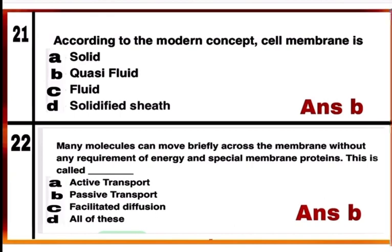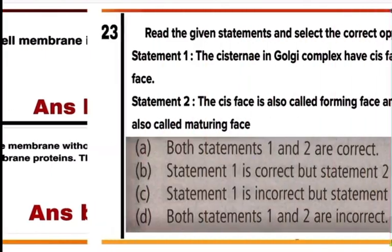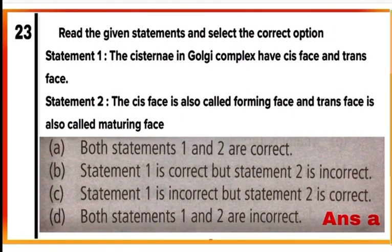Question 22: Many molecules can move freely across the membrane without any requirement of energy and special membrane proteins. This is called option B — passive transport. For example, water and neutral salts may move across the membrane without using energy or special proteins.